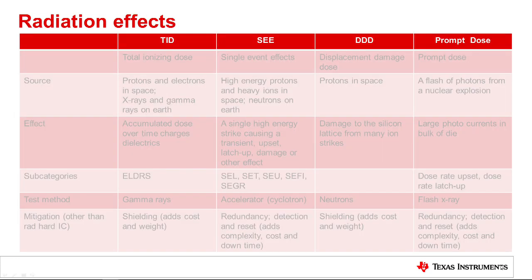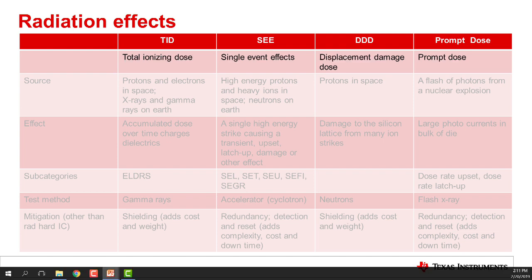This table summarizes the four main radiation effects seen in space. The four major radiation effects are TID or total ionizing dose, SEE or single event effects, DDD or displacement damage, and prompt dose.